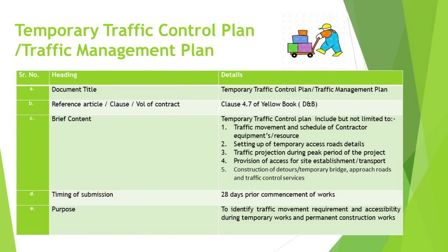We now turn to the Temporary Traffic Control Plan and Traffic Management Plan — documents crucial for maintaining the seamless flow and safety of the construction site and its surrounding areas. Outlined in Clause 4.7 of the Yellow Book for Design and Build Contracts, this plan addresses the dynamic and often overlooked aspect of construction: the impact on daily traffic flow and the provision of safe access. The plan covers several critical components: traffic movement and scheduling, including strategies for managing the flow of construction traffic to minimize disruption; resource allocation for traffic control, detailing necessary equipment, signs, and personnel; temporary access roads for construction activities; and traffic projection during peak project phases, anticipating traffic volume changes as the project progresses.